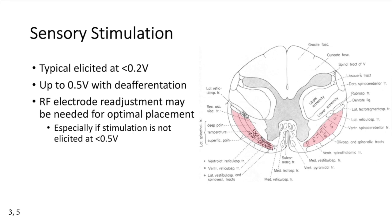Occasionally, paresthesias cannot be elicited in the area of pain but will instead be elicited in surrounding somatotopic areas. Adjustment of the RF electrode anterior-posteriorly and mediolaterally is needed to confirm optimal electrode placement. If sensory stimulation is not elicited at less than 0.5 volts, the RF electrode should be repositioned more anteromedially for cervical or thoracic pain, or posterolaterally for lumbosacral pain.